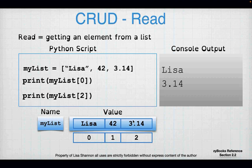To get the last element from the list — in this case at index two, to print 3.14 — I use mylist, open square bracket, the index number, closed square bracket. Notice there's no equal sign, because we're not doing an assignment. We're simply reading information inside the list.